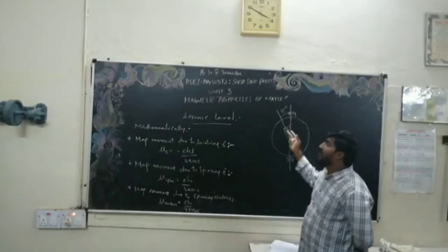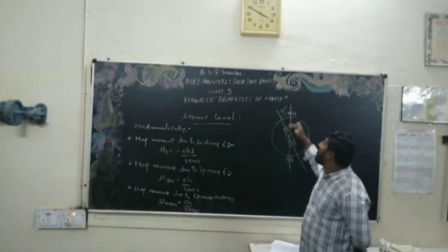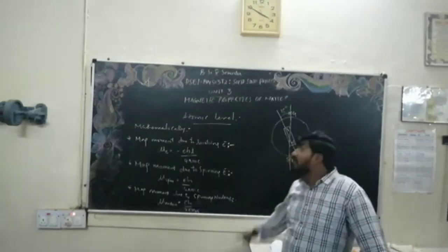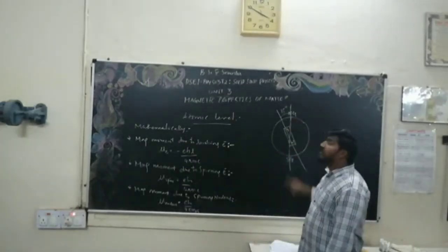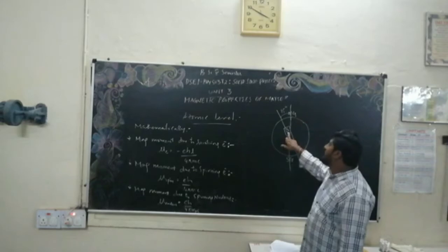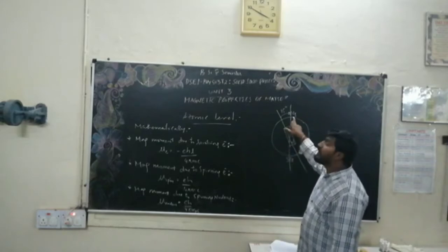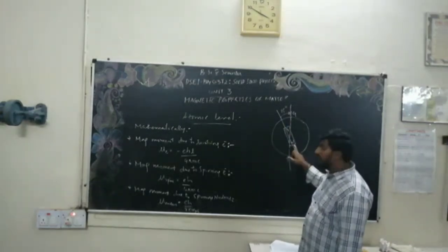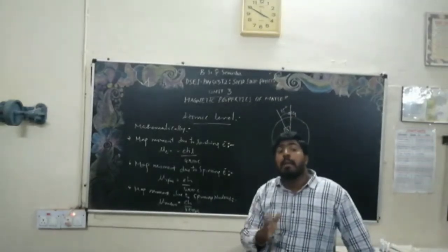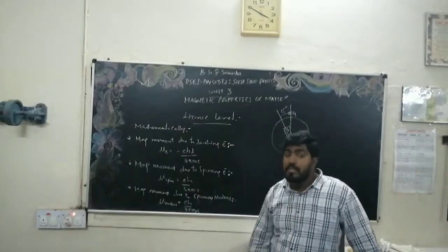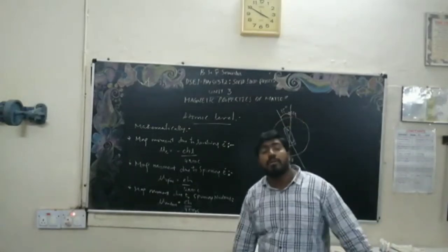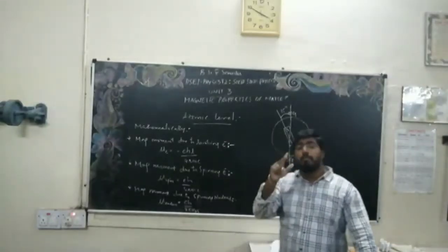Near the geographic north, the magnetic compass aligns because the magnetic south pole of the Earth's internal magnet is near the geographic north. The magnetic north pole is near the geographic south. The geographic axis and magnetic axis cannot coincide — they differ by about 15 degrees.